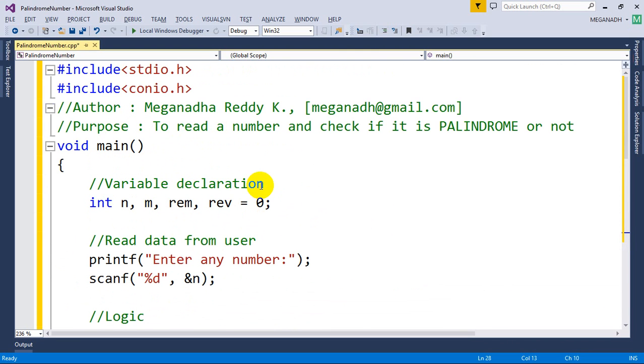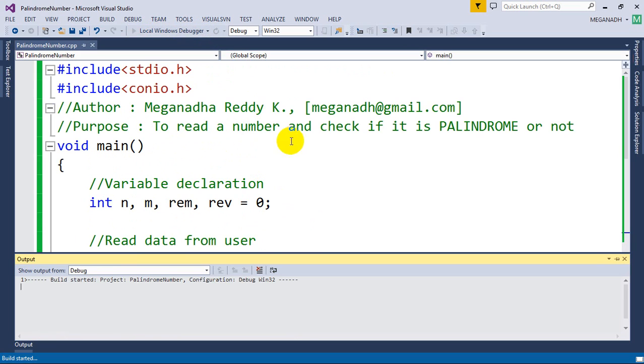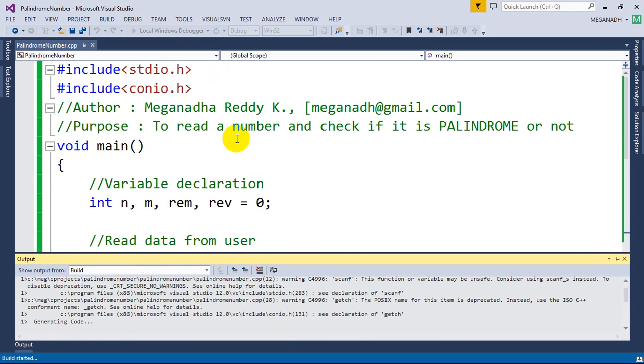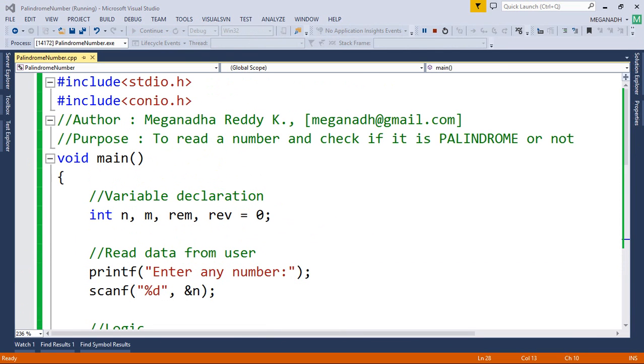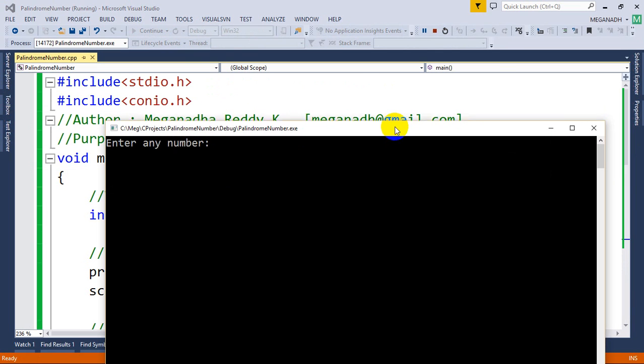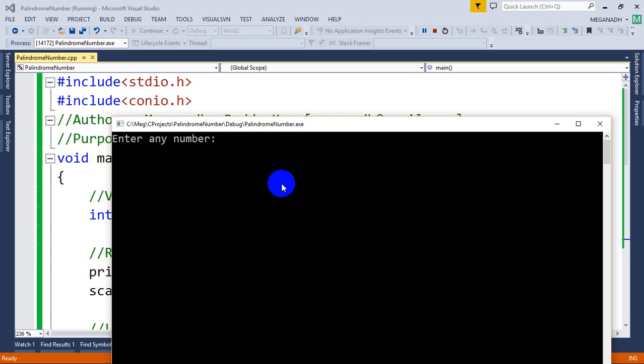Let's compile this, let's see if we get any errors and fix it. Now I'm going to execute this. Now you can see here it's asking me to enter the number and let's take 356 which is not a palindrome. So 356 is not a palindrome.